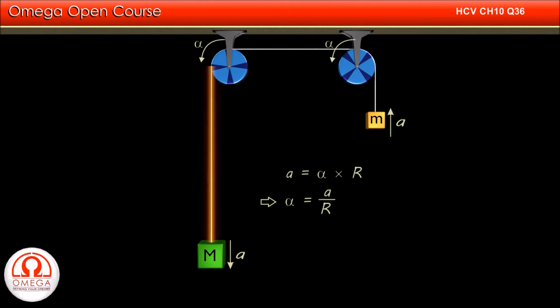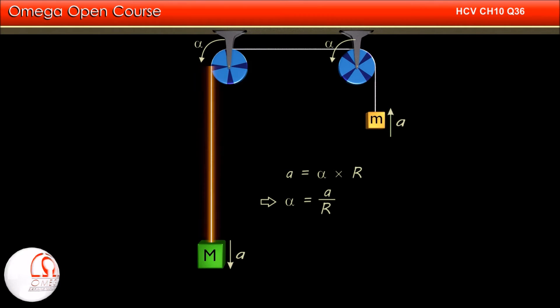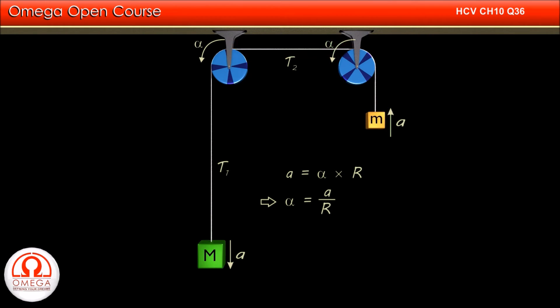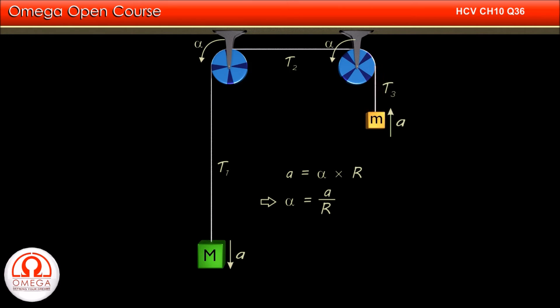Let us assume the tension in the segment of the string between the block on the left and the pulley be T1, tension in the segment of the string between the pulleys be T2, and tension in the segment of the string between the block on the right and the pulley be T3.